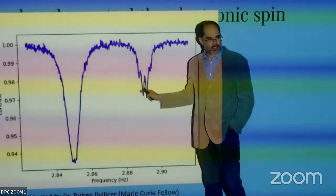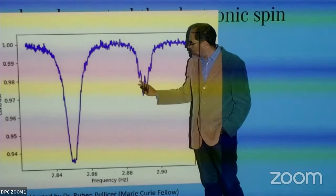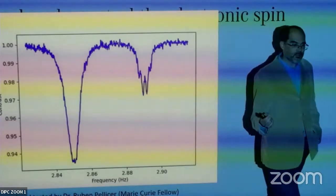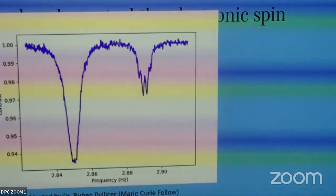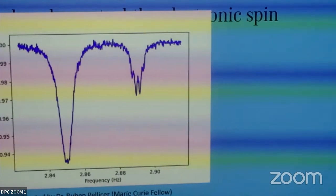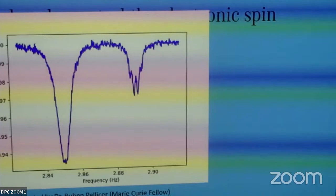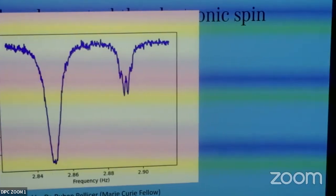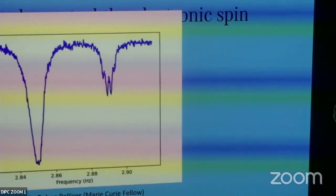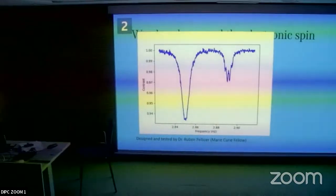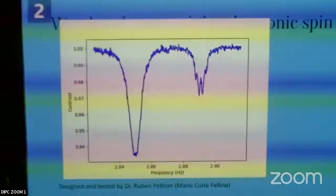Look at this: there is structure inside one of the peaks, given by the surrounding nuclei — this is the hyperfine splitting. This means we are starting to be able to control the nuclear spins as well. What needs to be done: this is for bulk samples with many NV centers — we want to isolate single NV centers to control individual electronic or nuclear spin systems.